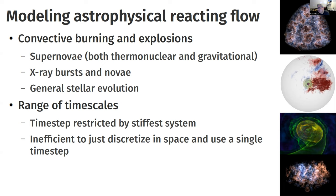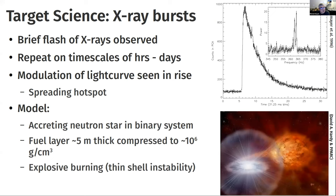The model for X-ray bursts is that a layer of hydrogen and helium builds up on a neutron star and then thermonuclear burns on a timescale of a second or so at temperatures around 10 million Kelvin. Only about 5 meters of fuel needs to accumulate before the base reaches densities of a million grams per cubic centimeter and temperatures of 100 million Kelvin — hot and dense enough to fuse helium into carbon and heavier nuclei.